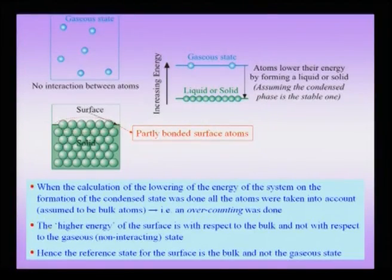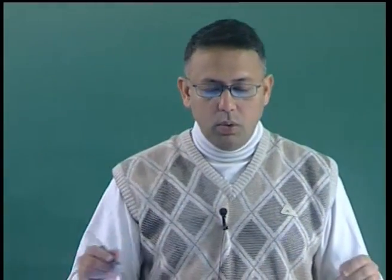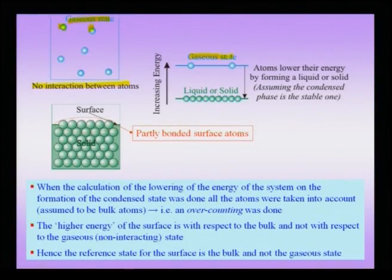I may want to assemble a solid or a liquid starting with the gaseous state. In the gaseous state the atoms are far apart — they need not be atoms, these entities could also be molecules, but for simplicity here we consider atoms. We assume that in the gaseous state, since the atoms are far apart, there is essentially no interaction — no attractive or repulsive interaction that continuously exists between a set of atoms. When you want to assemble a solid or liquid, we take the gaseous state and put it together in the form of a solid or liquid, as shown schematically here.